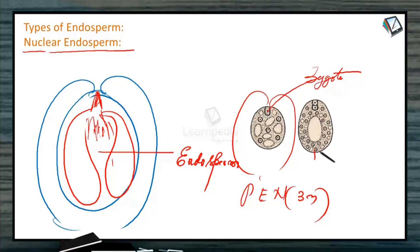So this endosperm is called nuclear endosperm. Nuclear endosperm is most prevalent in angiosperms and in 60% of the endospermic seeds, the endosperm is nuclear. Example: